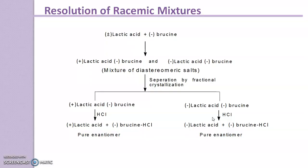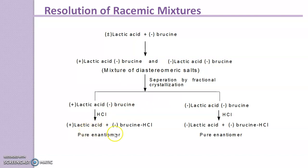Here is the diagrammatical representation of this explanation. The racemic mixture of lactic acid is treated with optically active brucine, forming two salts. A mixture of diastereomeric salts is formed and, because of differences in physical properties, they can be separated by fractional crystallization. After separation, they are treated with hydrochloric acid and individual pure enantiomers are obtained. This is the chemical method of resolution.